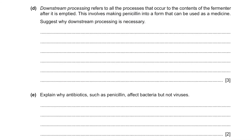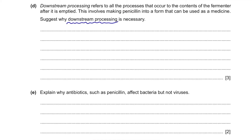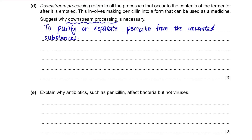Part D. Downstream processing refers to all the processes that occur to the contents of the fermenter after it is emptied. This involves making penicillin into a form that can be used as a medicine. We need to explain why this is necessary. When we get penicillin from the fermenter, we are not getting the pure penicillin itself — there is residue and penicillin is in solution. We need to purify or separate the penicillin from unwanted substances. When making a medicine, purity is extremely important because we do not want any harmful substances included.